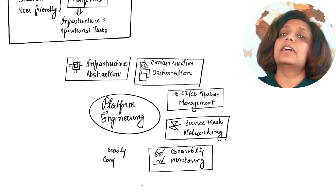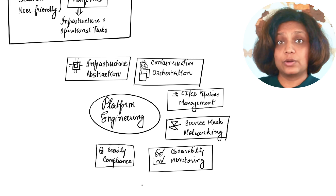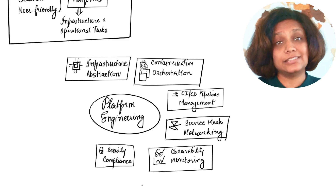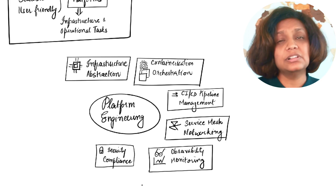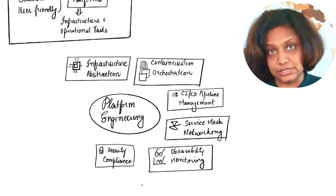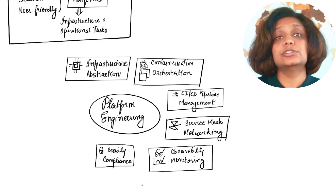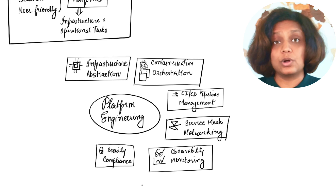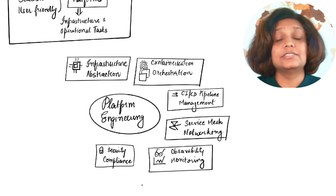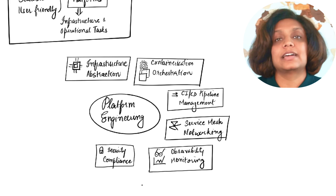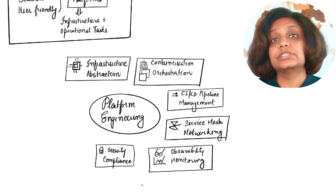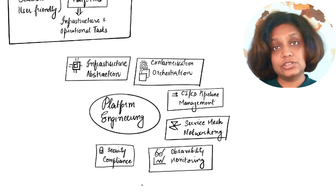Security and compliance is another big one. Implementing security best practices at the platform level is a key responsibility. This includes managing secrets using tools like HashiCorp Vault, implementing role-based access control (RBAC), and ensuring compliance with industry standards and regulations.